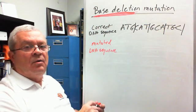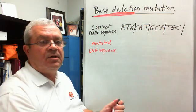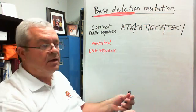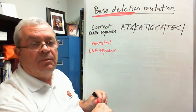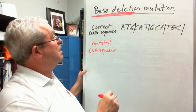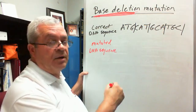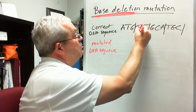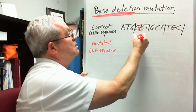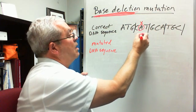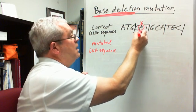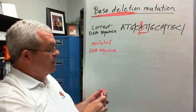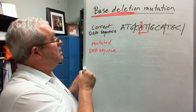What is a base deletion mutation? It's when a base is somehow deleted, either by damage or some kind of mistake or problem. And let's say it's this one right here. A base deletion is when a base is deleted — say that A drops out somehow, and the T moves down one position, one base. What will be the mutated DNA sequence?